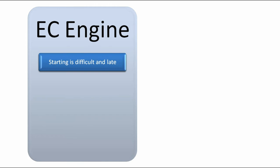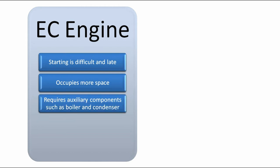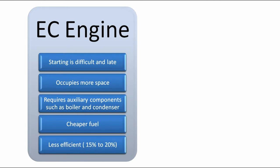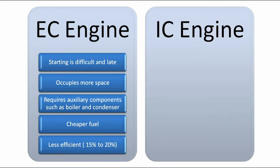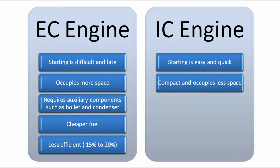In an external combustion engine, starting is difficult and slow, it occupies more space, requires auxiliary components such as a boiler and condenser, uses cheaper fuel, and is less efficient — around 15% to 20%.